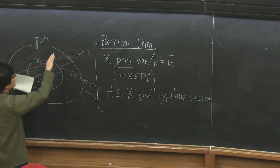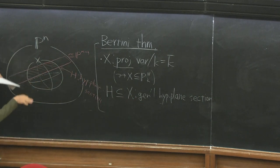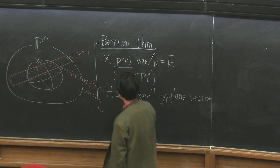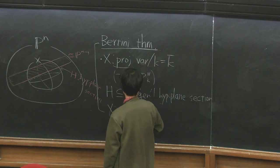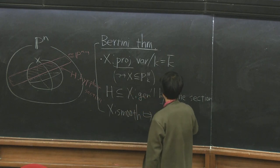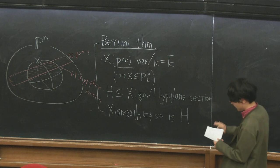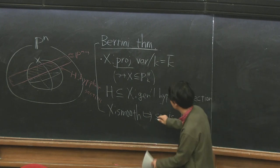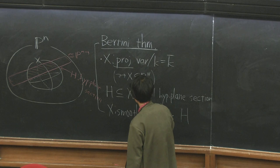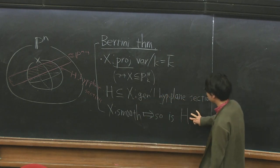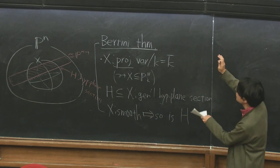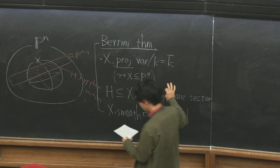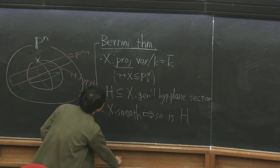General means we take this hyperplane very generally. If H is sufficiently general, we can show that if X is smooth, then so is the hyperplane section H. This is a very strong tool in algebraic geometry because the dimension of H is smaller than the dimension of X, making induction on dimension very convenient.